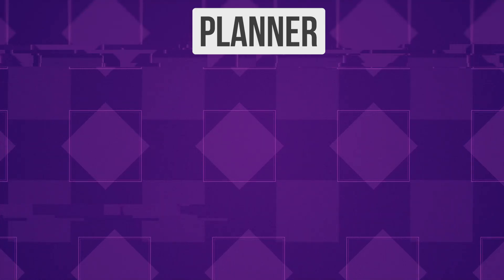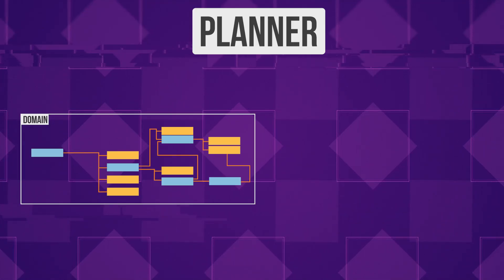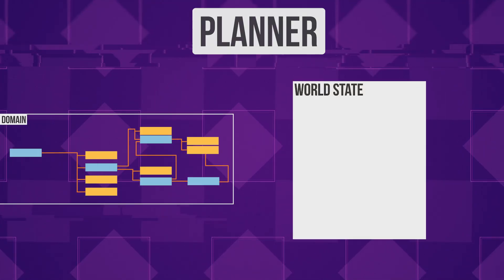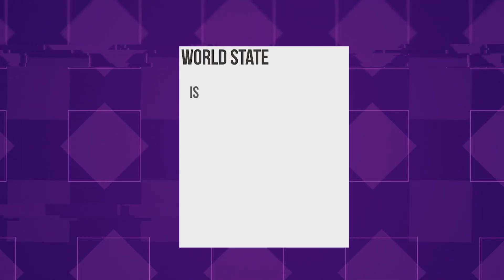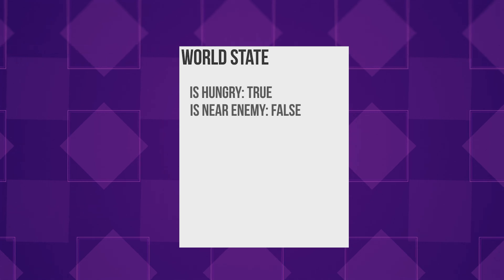Each agent will have their own planner. The planner will use a domain and also a world state. The world state is a representation of the game's state — it only contains the data that's relevant to your AI.